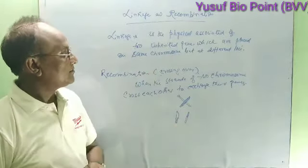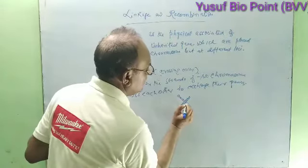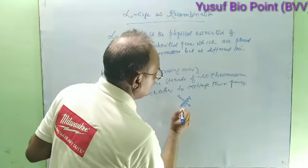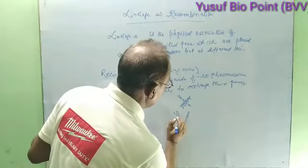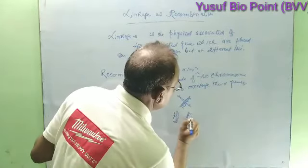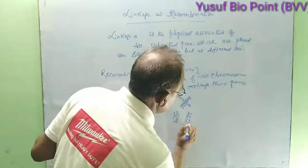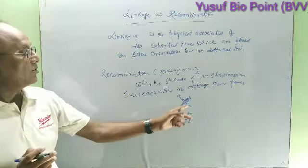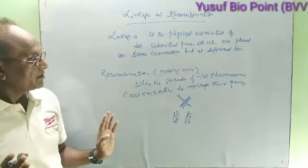In crossing over, the exchange of genes takes place. Suppose we have genes labeled A, B, C, D, E, F, G, H on one chromosome. After crossing over, that becomes A, B, G, H and the other becomes E, F, C, D. So the genes, which are located on the chromosomes, are separated from each other. That process is known as crossing over.